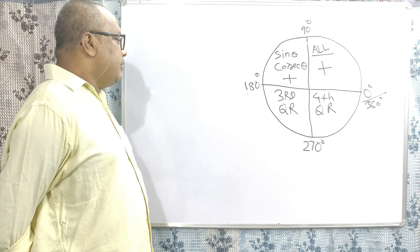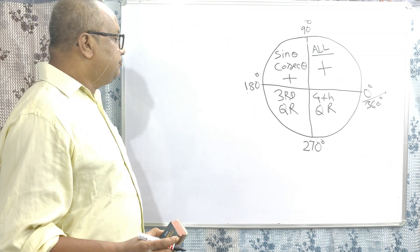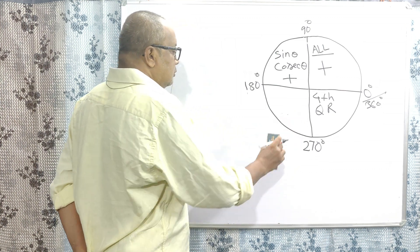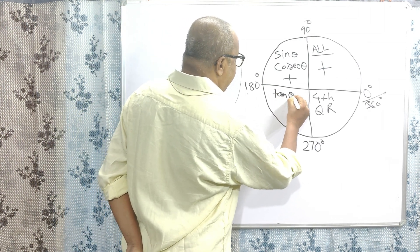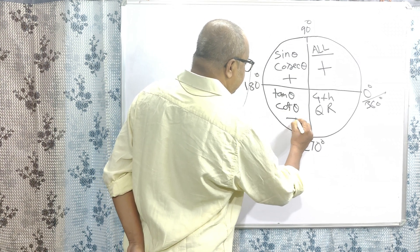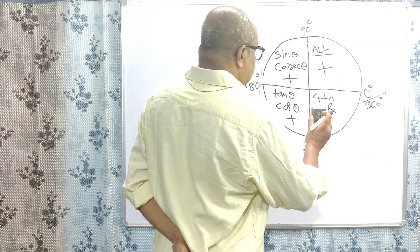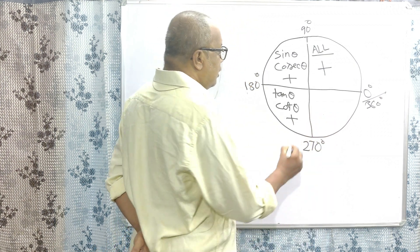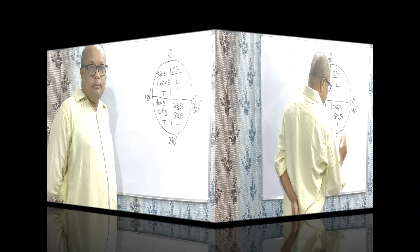In the third quarter, tan theta and cot theta are positive. In the fourth quarter, cos theta and sec theta are positive.